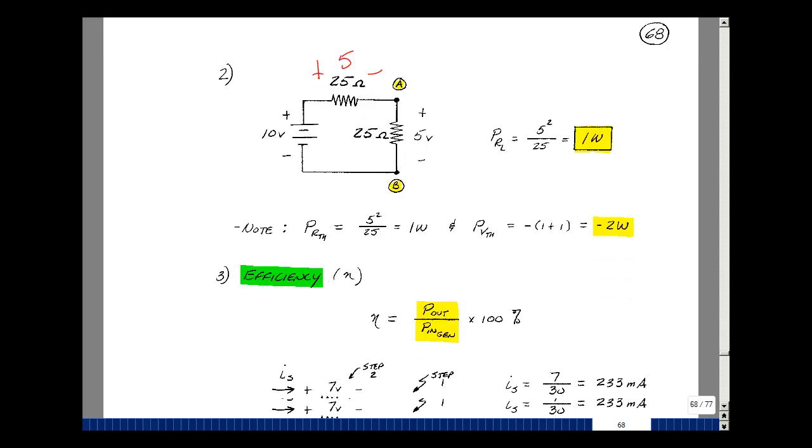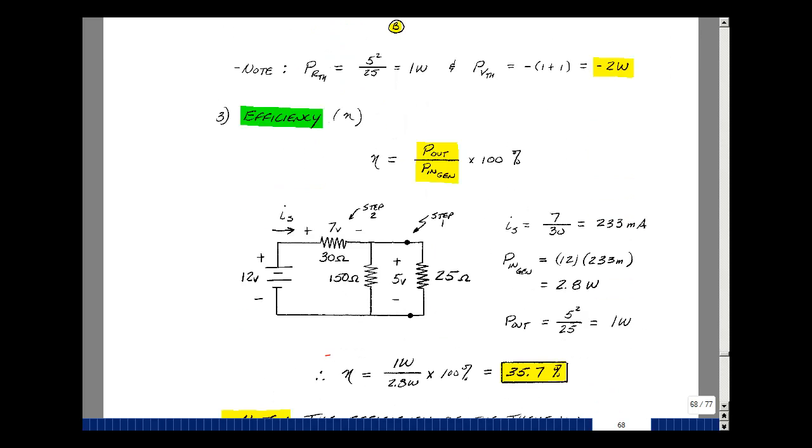Now let's find the efficiency. Let's go back to our original circuit now. Now I've thevenized this, and I found the voltage here is 5 volts, and that's still true. But now I want to put back in the original circuit. I need to find the current now.